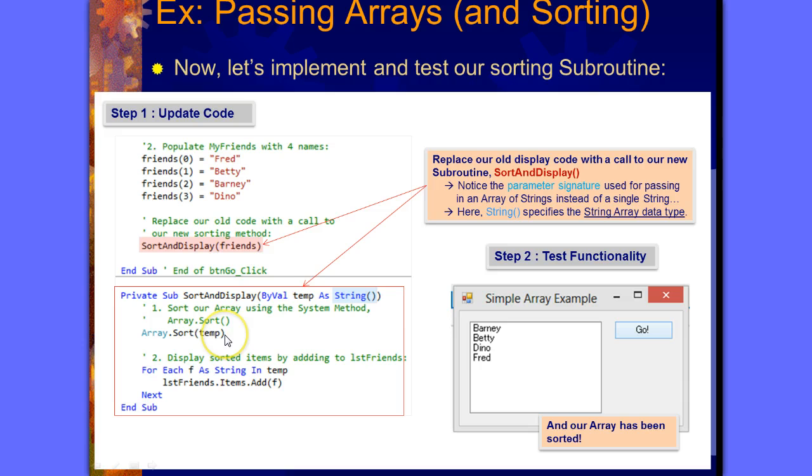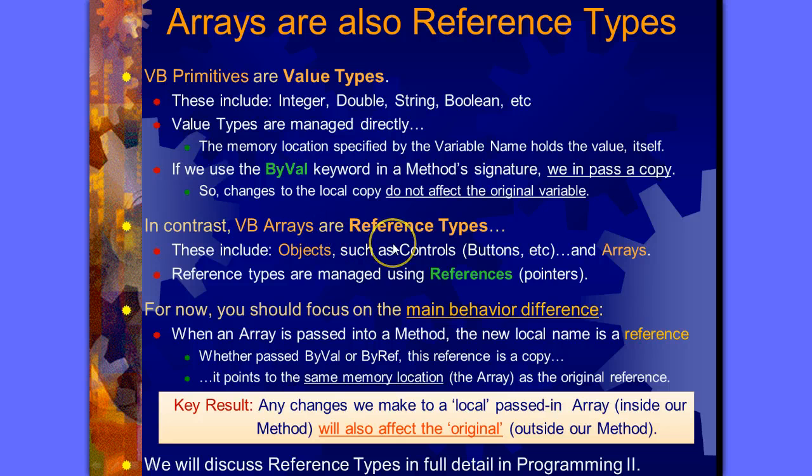It's not just sorting it locally here, but it's sorting the original one. If we put friends in here and apply this, the original array will also be sorted. It's not just going to be sorted inside this function, but the actual original array will be changed. We're disturbing the original array. It points to the same memory location as the original reference.